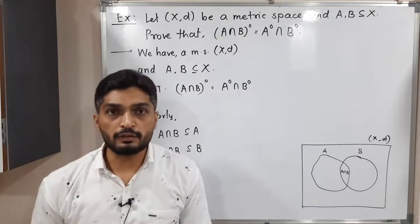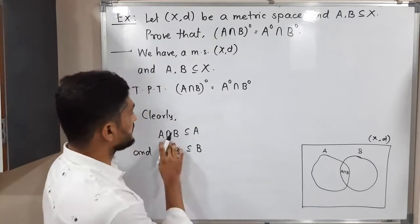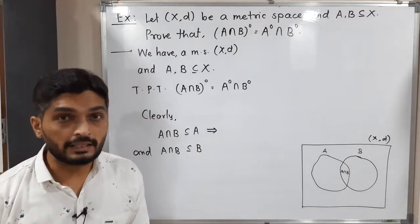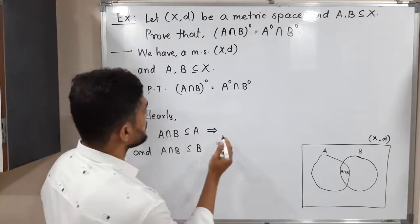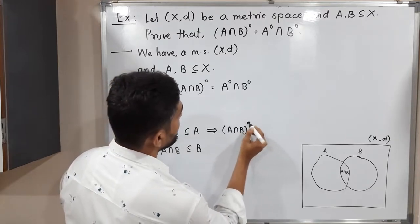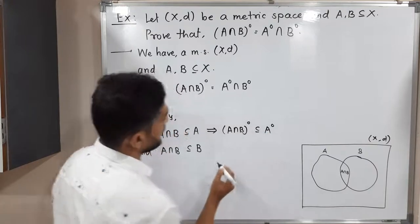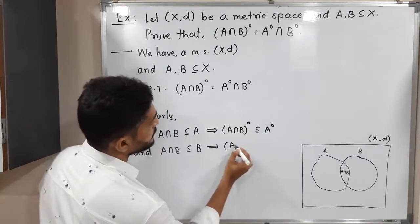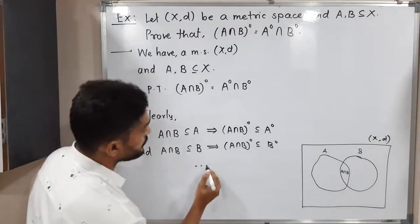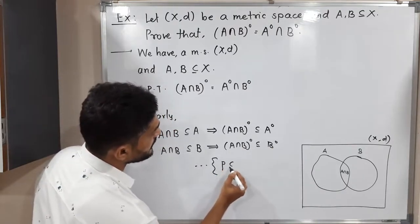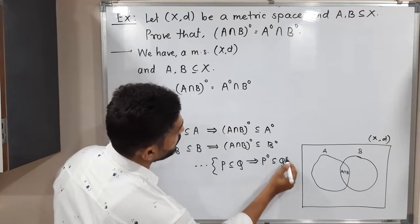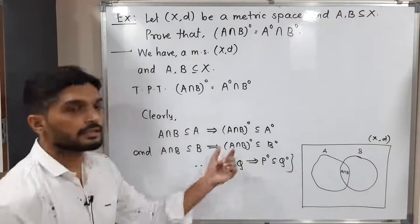In a previous video we already proved that if one set is a subset of another, then the same relation is maintained for their interiors. That means, since A intersection B is a subset of A, therefore the interior of A intersection B is a subset of the interior of A. Using the result: if P is a subset of Q then the interior of P is a subset of the interior of Q.